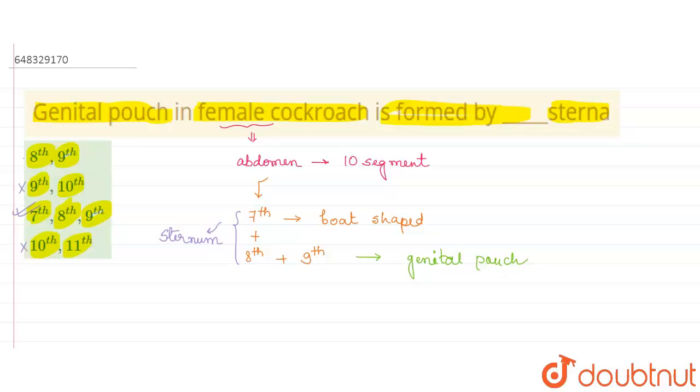For class 6-12, IIT-JEE, and NEET level, trusted by more than 5 crore students. Download Doubtnet app today.